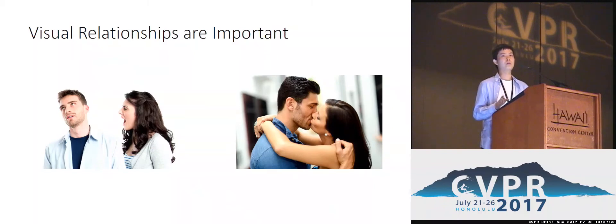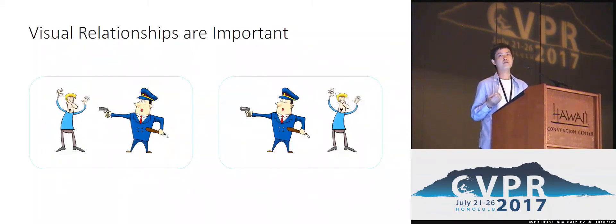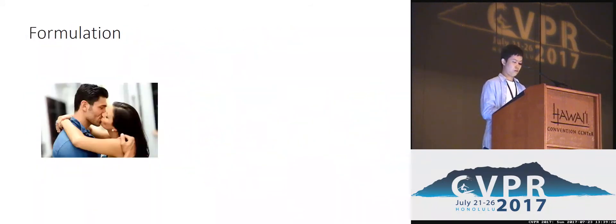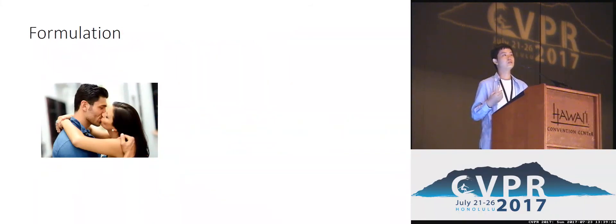And this is not a coincidence. Let's look at another pair of images where two objects have different spatial positions. Again, the semantics of these two images are different due to the different spatial positions. The interactions and the spatial positions are both certain types of visual relationships that we will encounter, and in this work we propose a unified framework to detect them all.